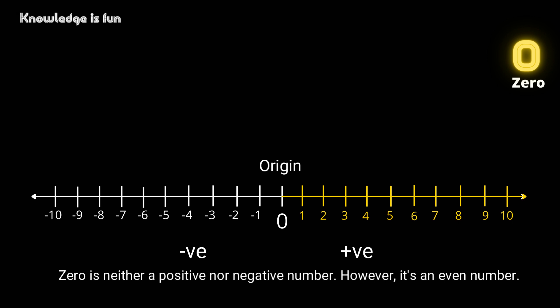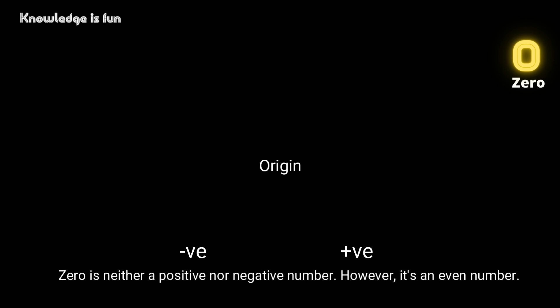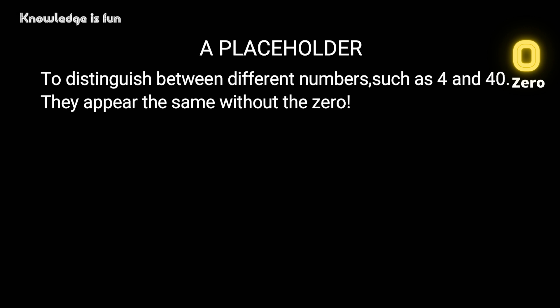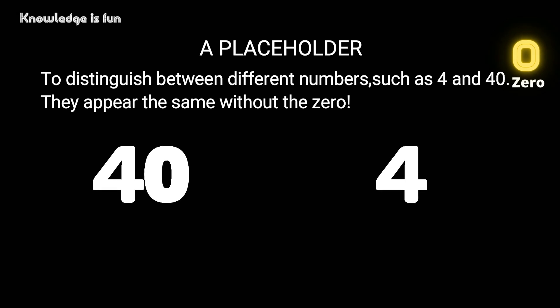Zero as a placeholder. For example, when you have four and four zero, this is called four, a single four, and this is 40. Without the zero, they look almost the same. In fact, they look the same.